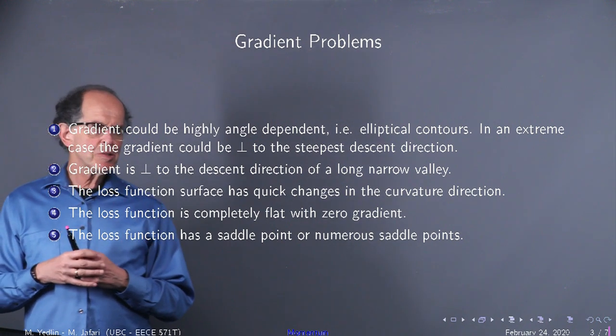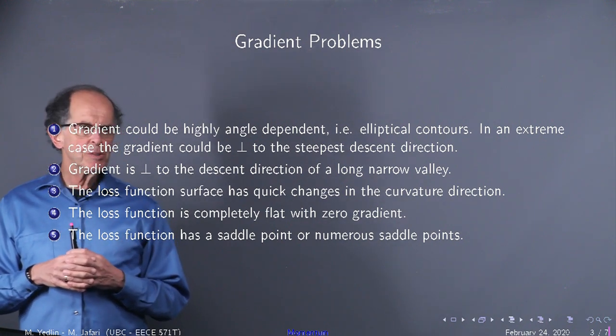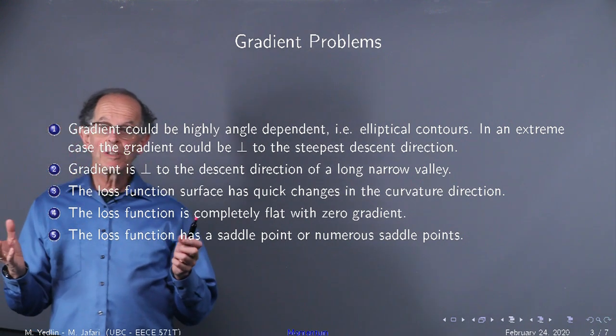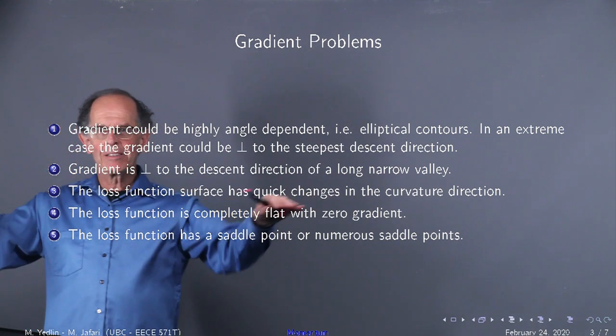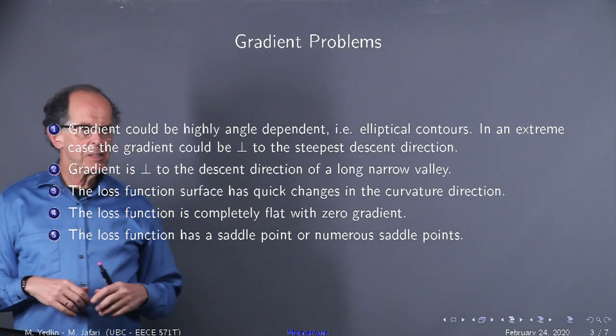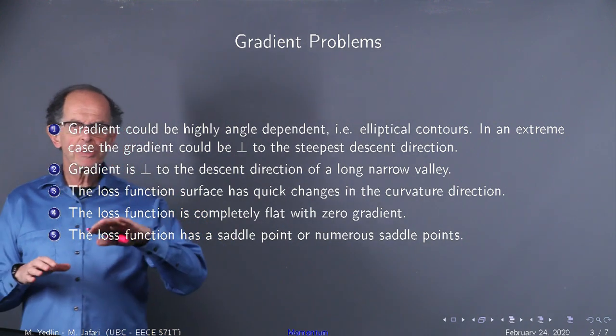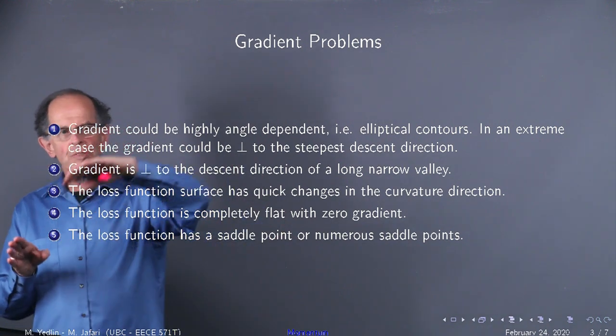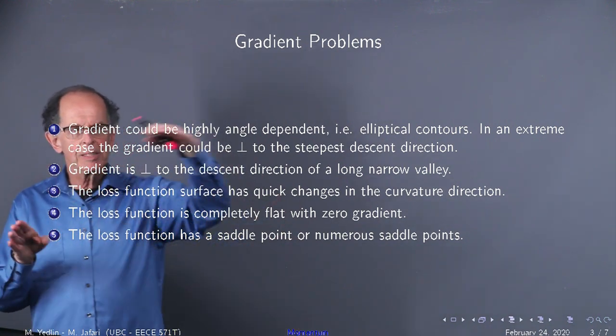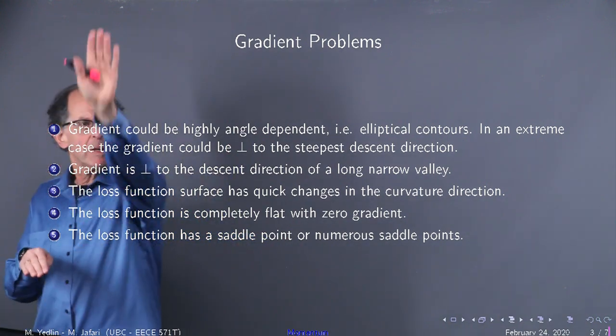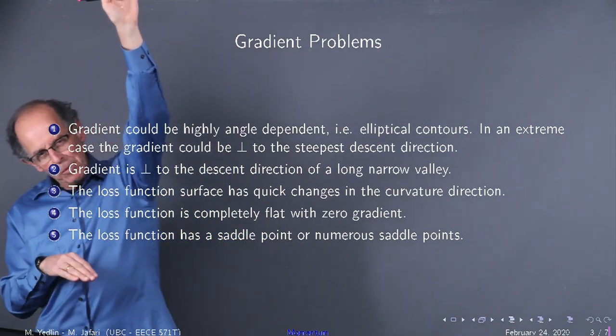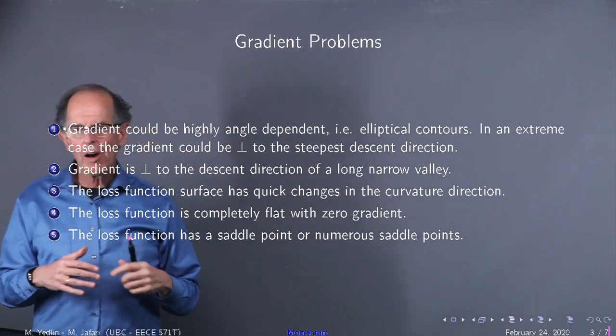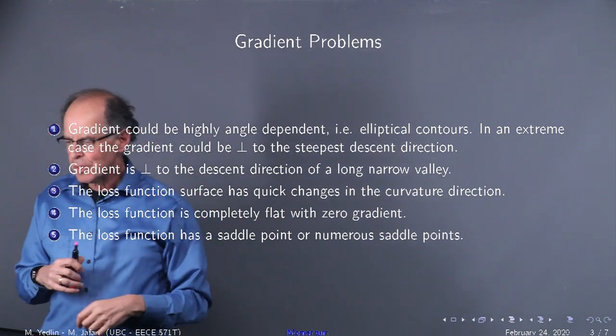The loss function surface could have very quick changes in its curvature direction. The loss function could be totally flat. That means we're not going anywhere. The loss function has a saddle point. A saddle point is where the surface in one direction looks like this, and then the other direction slopes up and comes, slopes down and comes up. And so, this can all cause problems with gradient descent.